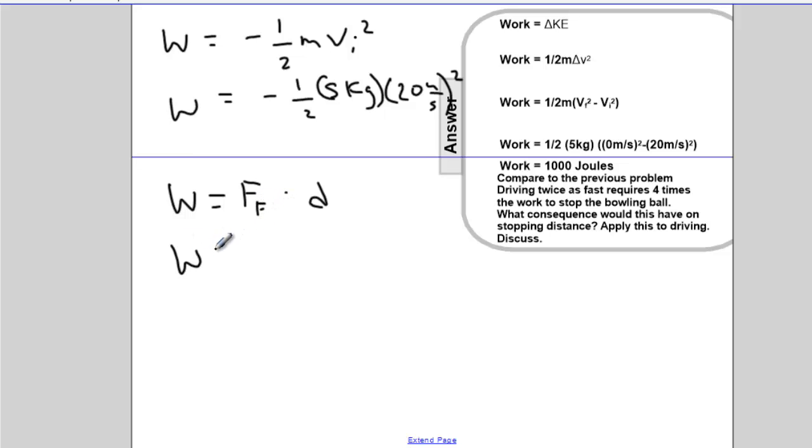So the work done will be the force of friction, which is mu m g times the d. And that work you have to do is equivalent to your kinetic energy change, your one-half m v squared. That's equal to mu m g d.